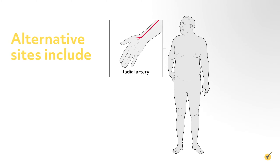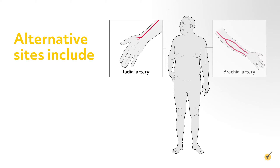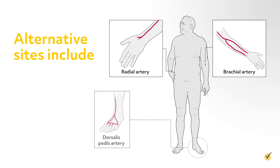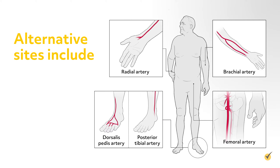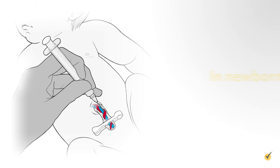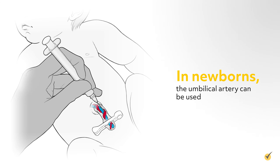Alternative sites include the brachial artery, the dorsalis pedis artery, and the femoral artery, with the posterior tibial artery being a less used option. In newborns, the umbilical artery can be used.